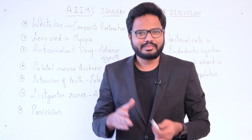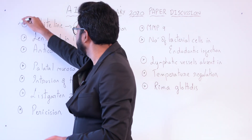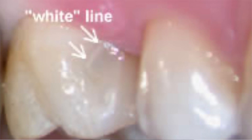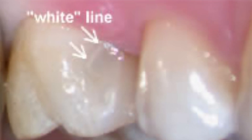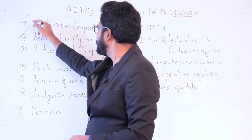Why do you see a white line in case of composite restoration? It could be because of space creation between the composite and the tooth structure, or because of micro-fracture within the marginal enamel, caused by inadequate etching and bonding, high-intensity fast light curing resulting in excessive polymerization, or traumatic finishing techniques.